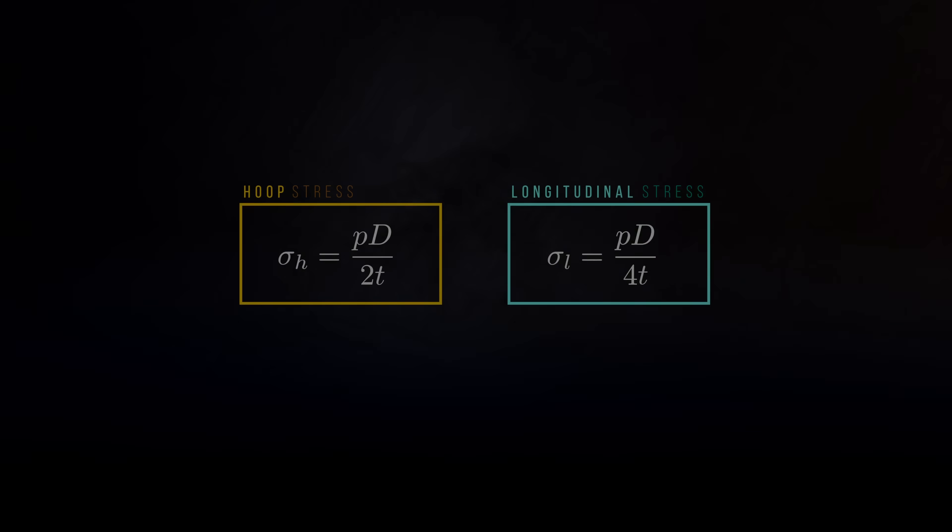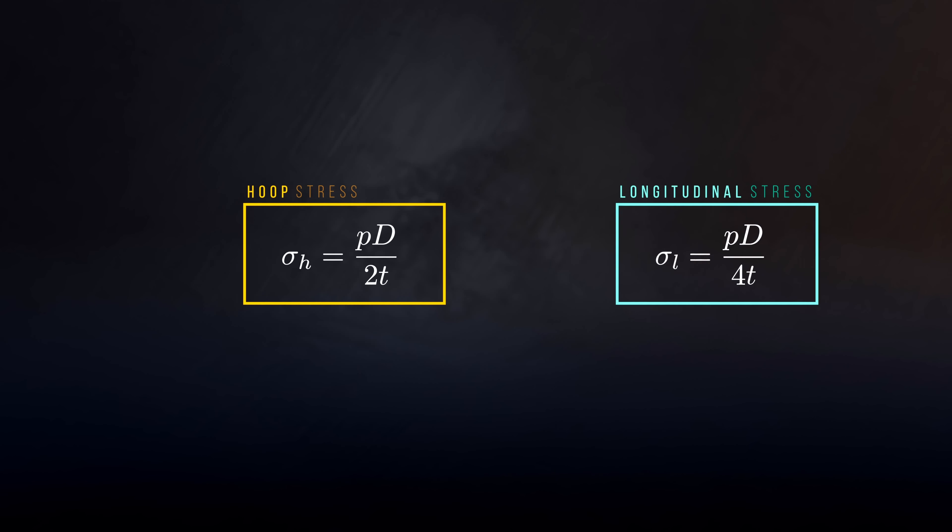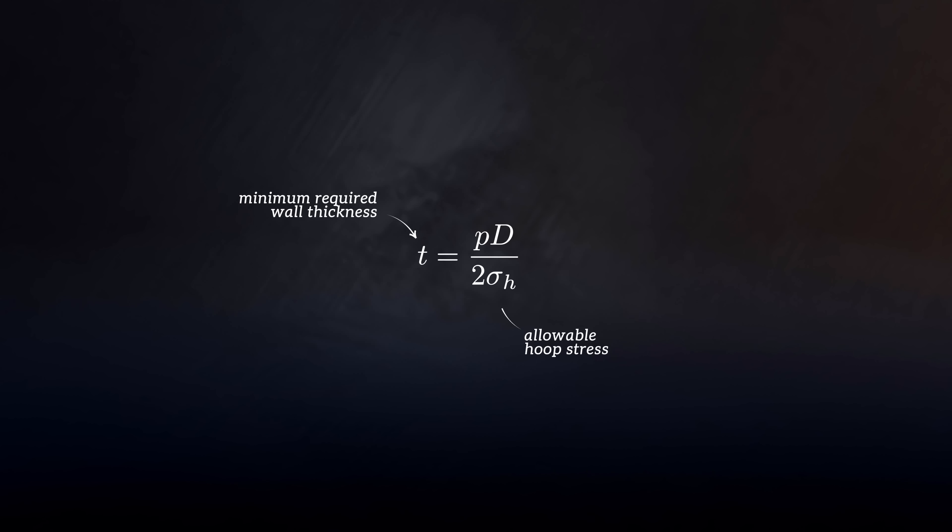With the hoop stress being the critical stress, it's the PD over 2T equation that's used to calculate the minimum wall thickness required to safely contain an internal pressure P. All we need to do is define an allowable hoop stress, which is often taken to be 80% of the material's yield strength.